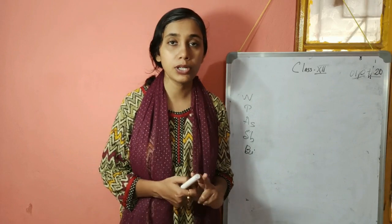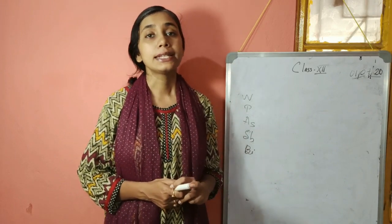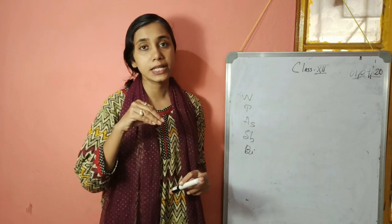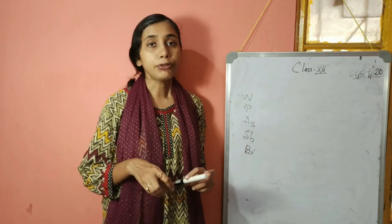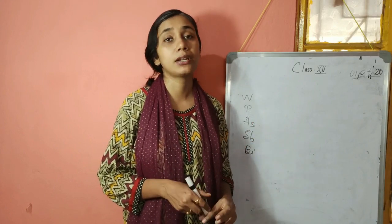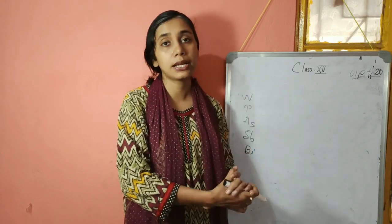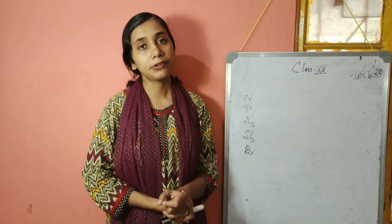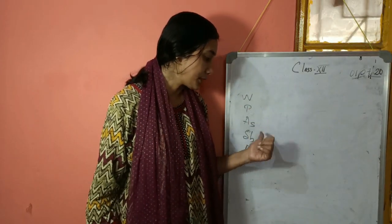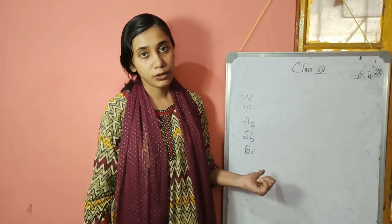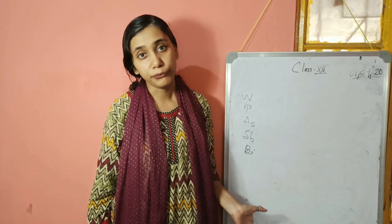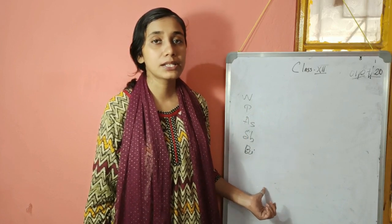Now talking about the hydrides of Group 15 elements — hydrides of nitrogen, phosphorus, and so on — the stability of the hydrides gradually decreases from top to bottom. The atomic radius, ionization potential, and other individual element properties generally follow the expected group trend: atomic radius increases and ionization potential decreases going down. The stability of hydrides is highest for nitrogen (NH3) and least for bismuth hydride (BiH3), due to the increasing size of the central atom.